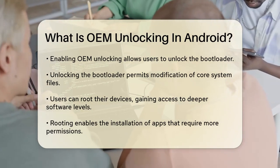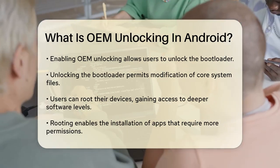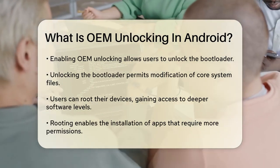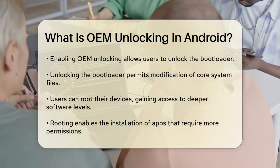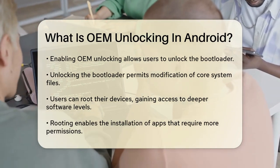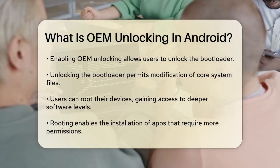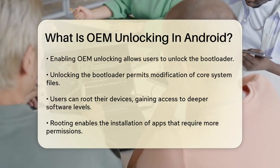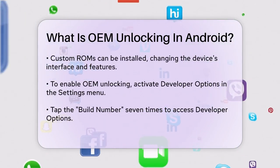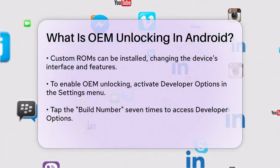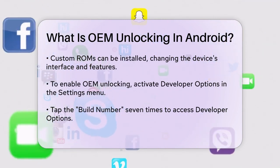So why would you want to enable OEM Unlocking? The main reason is to gain the ability to root your device or install custom firmware, known as custom ROMs. Rooting your device gives you access to the deepest level of your device's software, allowing you to install apps and software that require more permissions than what's typically available. Custom ROMs can change your device's interface, add new features, and even provide performance improvements.